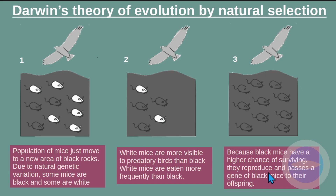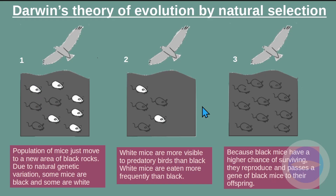Because black mice have a higher chance of surviving — they are not visible to predators — they reproduce and pass the gene for black coloring to their offspring. So you end up with a higher number of black mice compared to white mice. That is Darwin's theory: it depends on the condition you are in. We started with a group of mice, some white and some black, but at the end we have a higher proportion of black and a lower proportion of white.